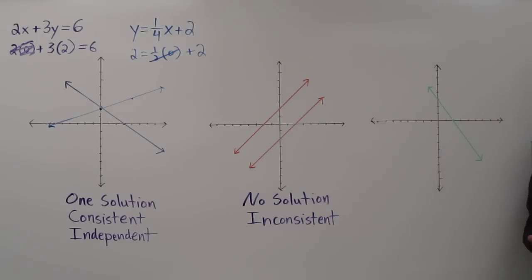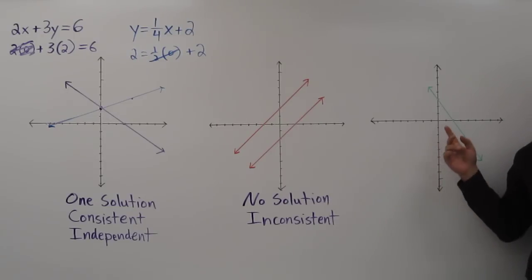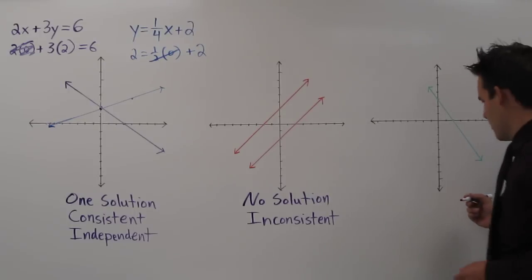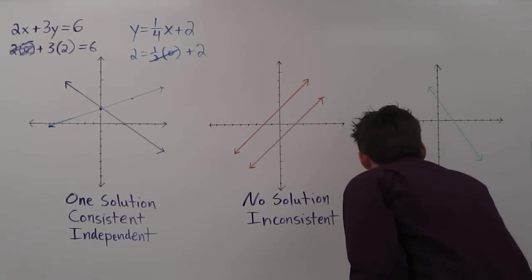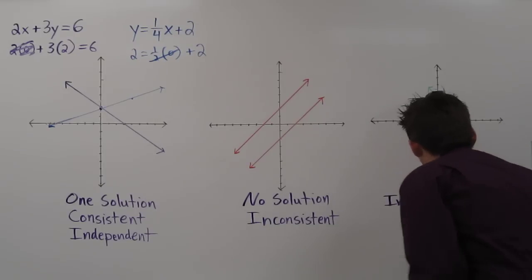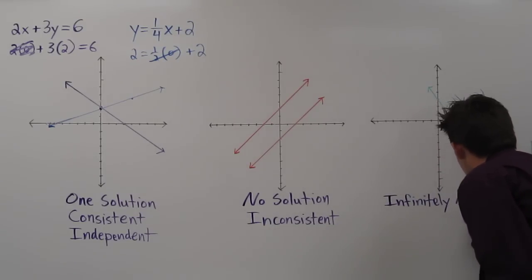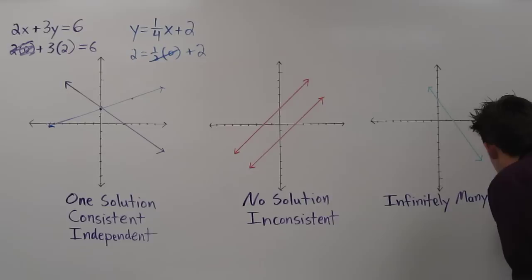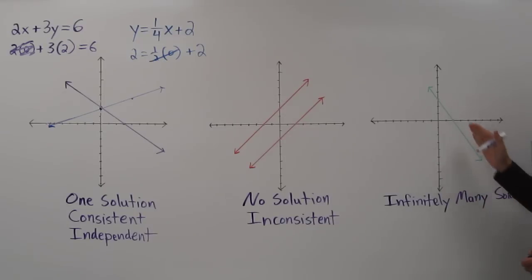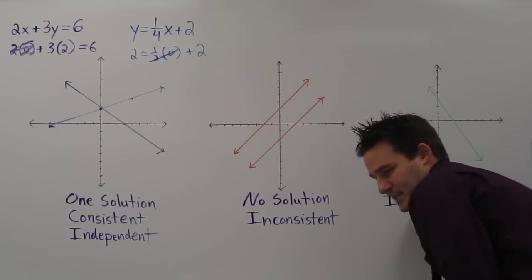Finally, sometimes we graph systems of equations and we actually get the same line. So this is actually two different equations graphed, but they both have the same line. We call this infinitely many solutions because there's infinitely many intersections between these two lines. And we call this consistent.